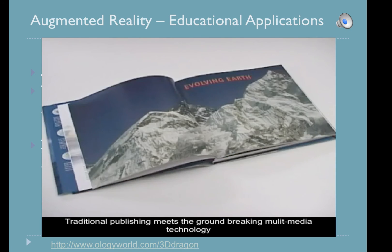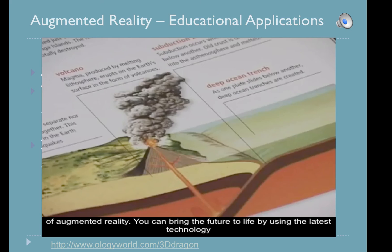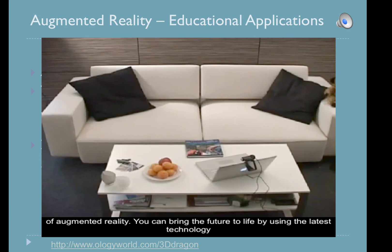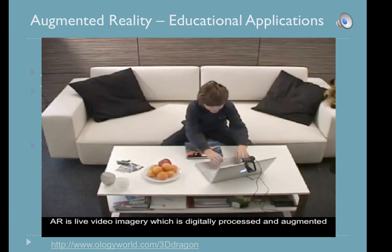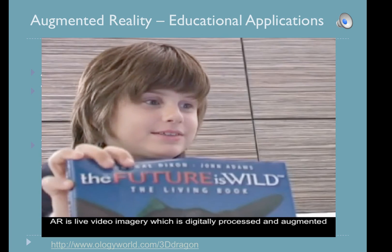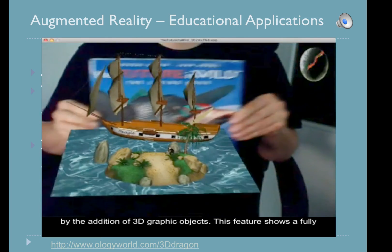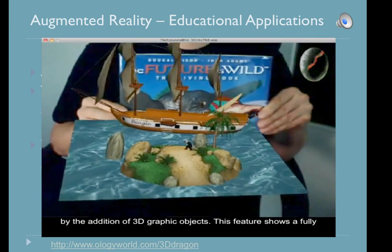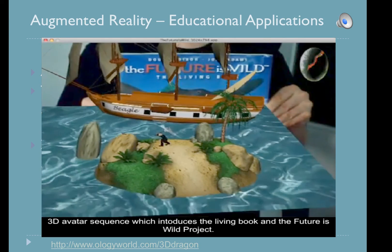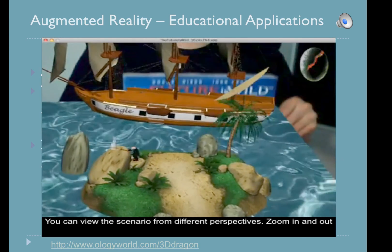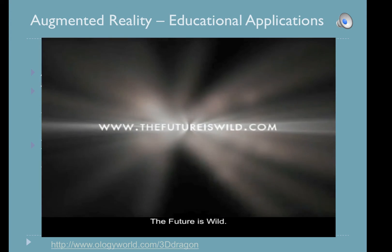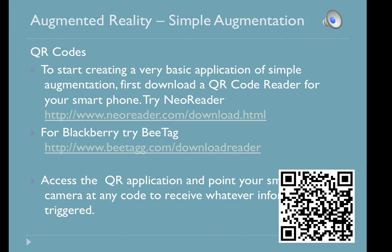Traditional publishing meets the groundbreaking multimedia technology of augmented reality. You can bring the future to life by using the latest technology. AR is live video imagery which is digitally processed and augmented by the addition of interactive 3D graphic objects. This feature shows a fully 3D animated avatar sequence which introduces the living book and the Future is Wild project. You can view the scenario from different perspectives and zoom in and out.